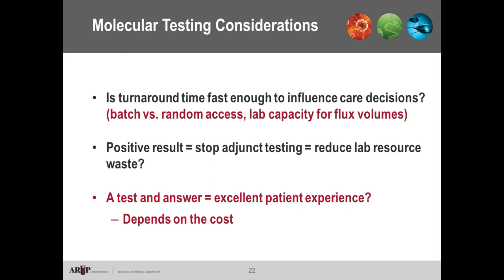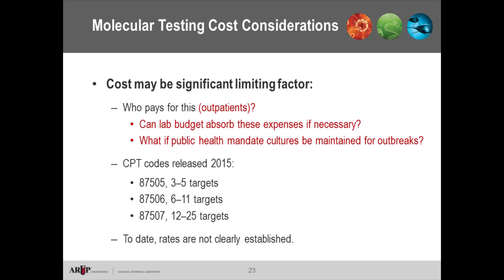However, there are caveats. If the test is negative and the patient gets a $500 bill, is that an excellent experience? Conversely, if a target is detected but the physician had no intention of acting on it, and the bill is still $500, is that excellent? Reimbursement is unclear — in the outpatient setting it's not standardized. The lab may need to absorb unreimbursed expenses. Public health may mandate backup cultures, raising cost-effectiveness concerns. CPT codes for multiplex GI testing were released toward the end of 2015, based on number of targets, but average reimbursement rates remain inconsistent.